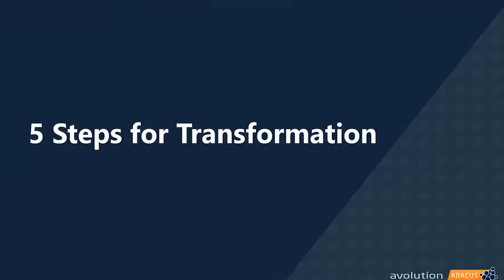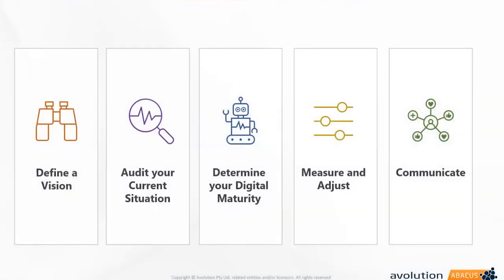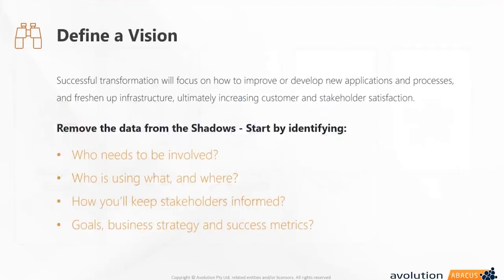So what are the five steps for transformation? The first is to define a vision. The second is auditing the current situation. We'll look at determining digital maturity and how we model that current situation. The most important aspect is communication. We'll touch on each of these topics. The first step — defining the vision — becomes the foundational first stage.